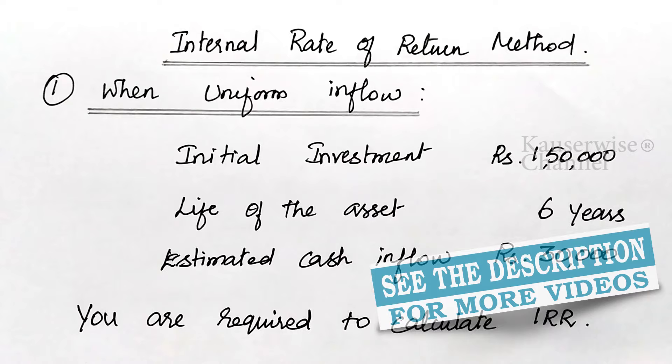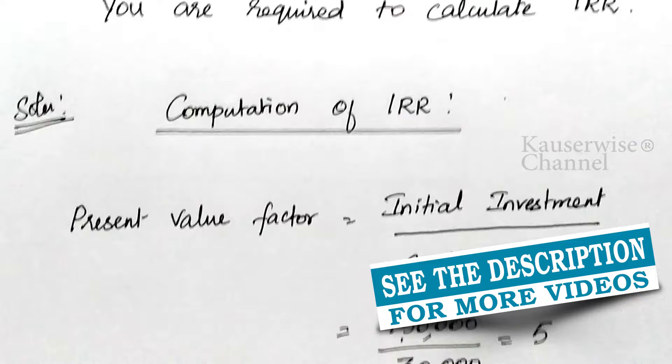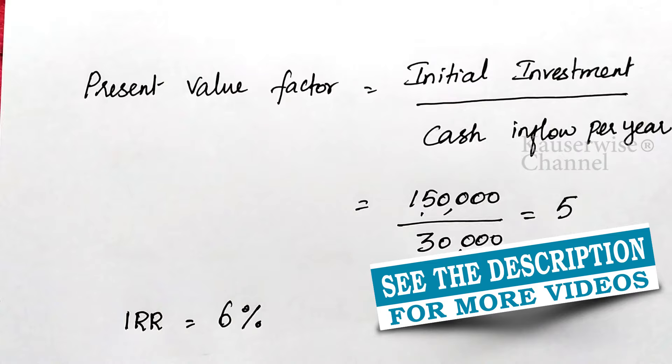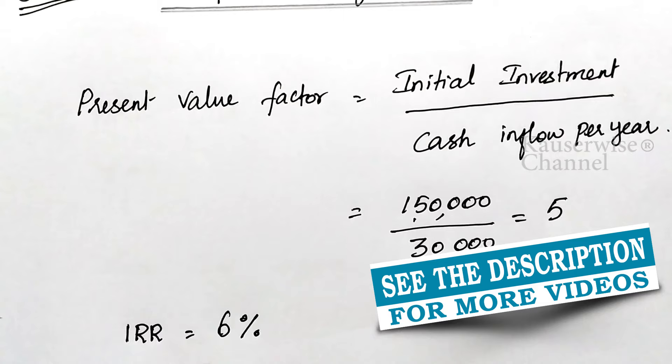This is the way to calculate IRR when uniform inflows are given — the IRR is six percent. In the next video we will see the trial and error method to calculate IRR; you can find the links in the description. Hope you liked this video — please subscribe and share with your friends. Thank you.